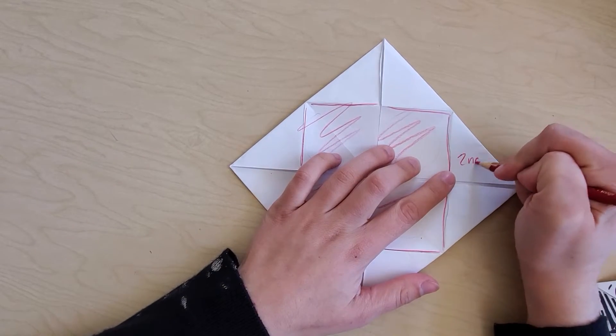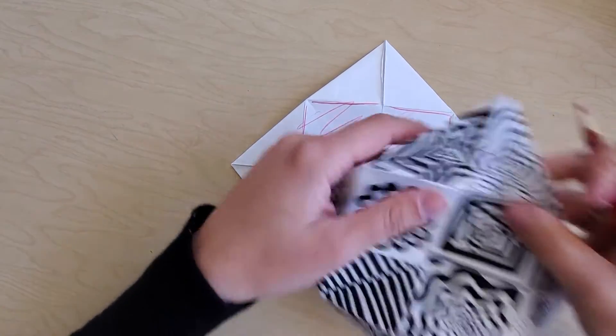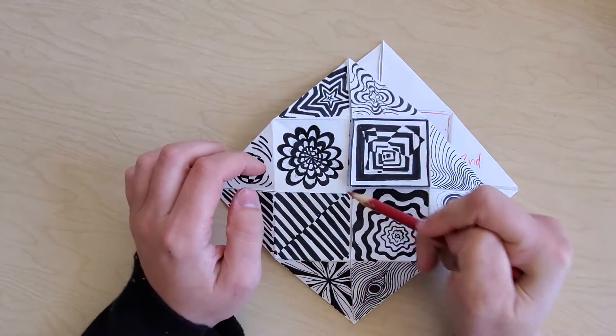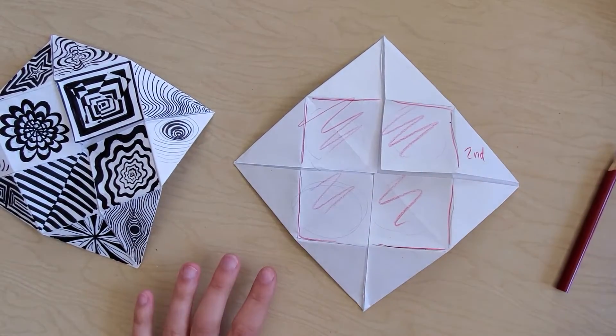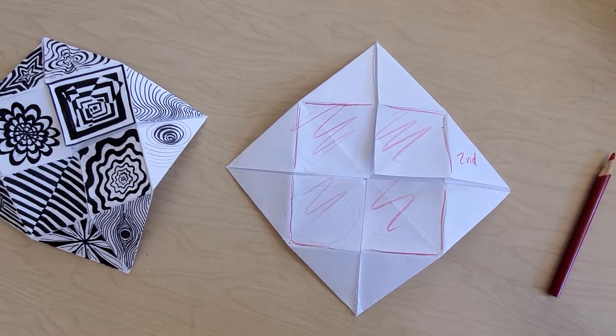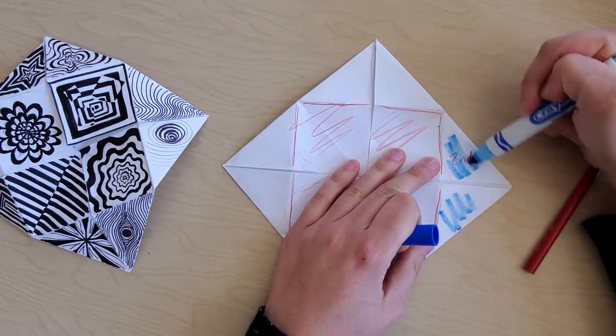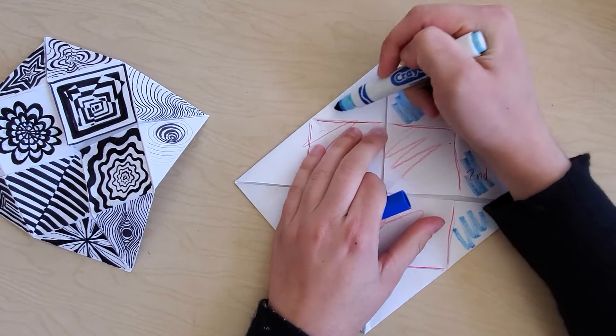Second, you're going to draw on these outside triangles and get a different design in each of those. So those are going to be the two most important steps. For the second, I'm just going to scribble in blue so you can see what I mean.